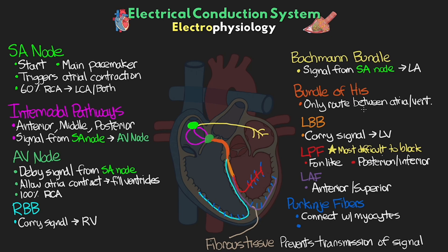The Purkinje fibers are responsible for initializing depolarization in the muscle cells, leading to contraction of the cardiac muscle. Like the atrial myocytes, the ventricular myocytes further propagate the signal to the other surrounding cells, just at a much slower speed than the high-speed bundles and fascicles do.